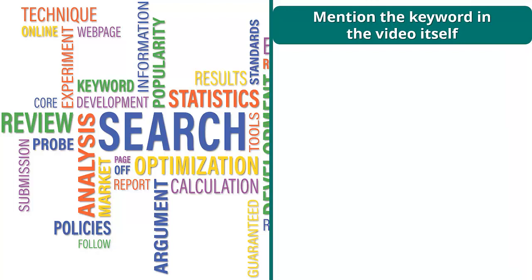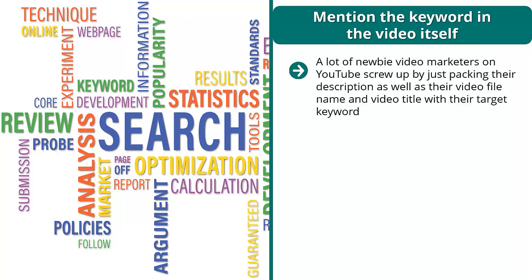Mention the keyword in the video itself. A lot of newbie video marketers on YouTube screw up by just packing their description, as well as their video file name and video title, with their target keyword. That is spam. Don't do that. You can mention your target keyword in your title once and then maybe a related keyword in the subtitle — that's it. Don't overdo it. Don't stuff the description or title of your video with keywords.